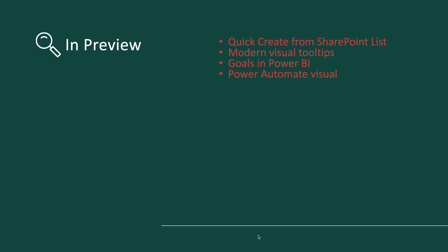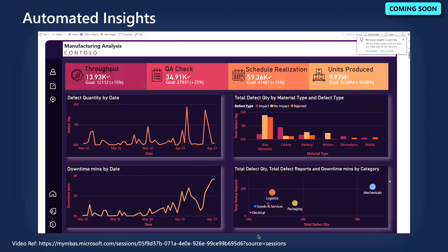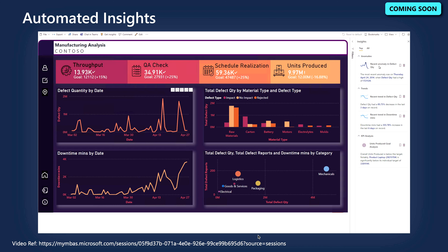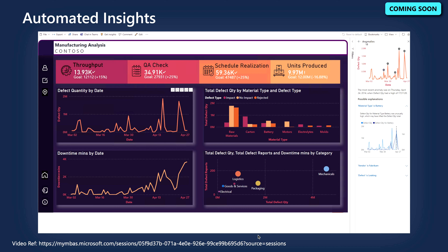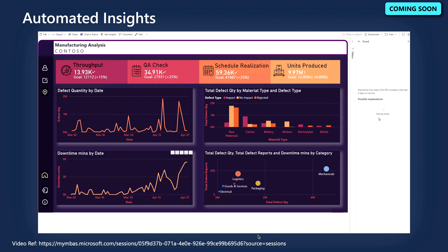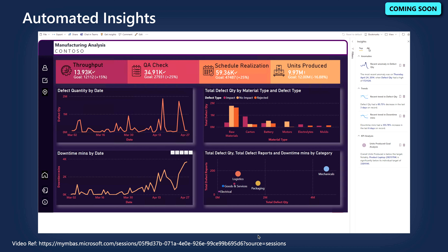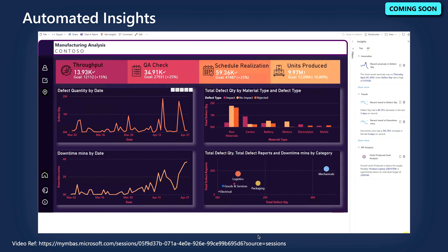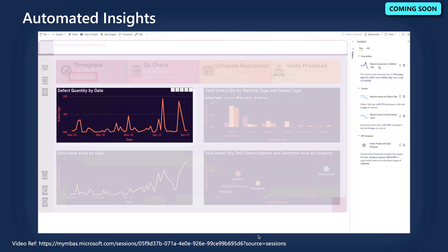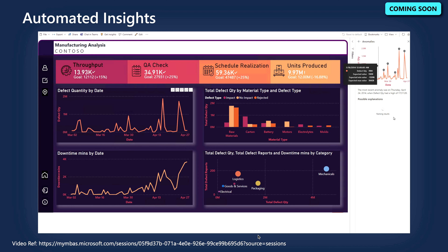The first upcoming feature is Automated Insights. Automated Insights combines all Power BI AI functionality — ranging from anomaly detection to smart narratives and the decomposition tree — into a single end-to-end experience. When you open a report, automated insights runs behind the scenes and surfaces details that need your attention. You can also click the new 'Get Insights' button in the ribbon for additional insights about the visuals you are seeing.